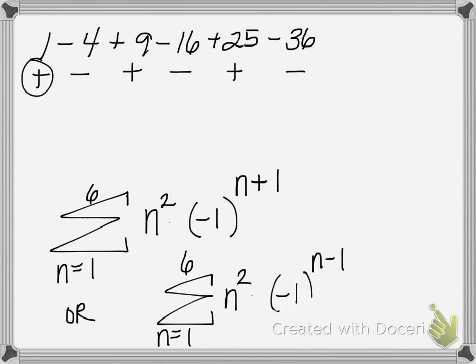In general, when you have an alternating sign pattern, you can always start with negative 1 raised to a power, and then think about adjusting what that exponent is. That helps you determine whether the first term should be positive or negative.